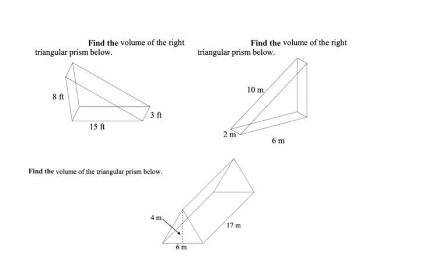Let's do some more. Our next one we're going to review is triangular prisms. Remember the formula is volume equals capital B times H — our base of our shape, which is a triangle, times the height. So if we look here, our base is this right triangle.